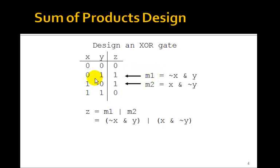But remember, minterms are 1 for a particular input. So z is just this minterm, m1, or this minterm, m2. You see why we call it a sum of products.